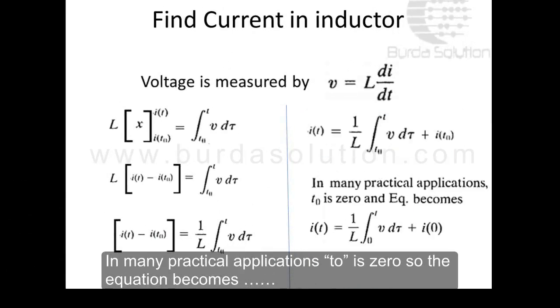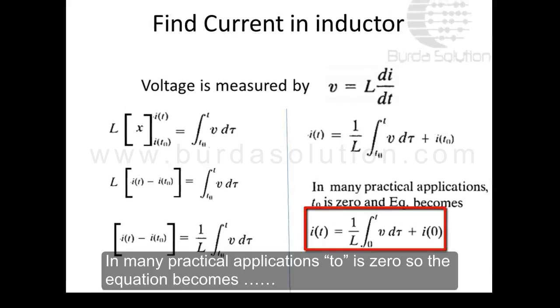In many practical applications, t₀ is 0. So the equation becomes: i(t) = (1/L) · ∫₀ᵗ V dt + i(0).